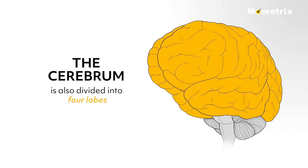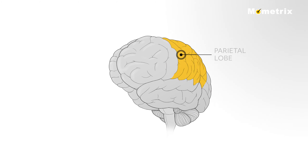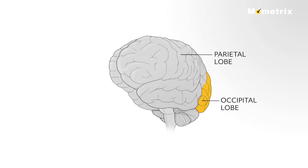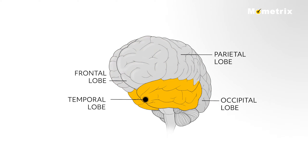The cerebrum is also divided into four lobes: the parietal lobe, the occipital lobe, the frontal lobe, and the temporal lobe.